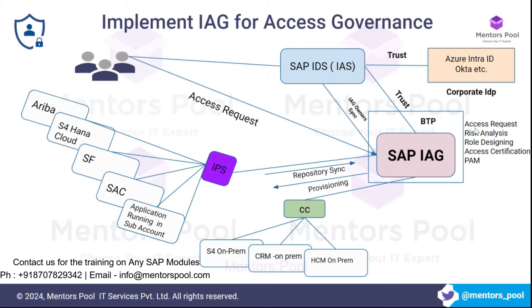Another capability of the access governance tool is risk analysis — access risk analysis. A lot of people have access to many applications, and as a security or access governance consultant, you keep doing risk analysis. Maybe some people have more access than they need, or some have less and can't do their job properly. The tool pulls all user data from integrated systems, applies risk rule sets, analyzes the risk, and takes the required mitigation steps.